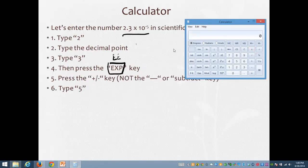All right, so I want to enter this number in my calculator. I'm going to follow directions. 2, decimal point, 3, press the EXP key, press the plus minus, which is right here, and 5. And this is going to give me 2.3 times 10 to the negative 5th.